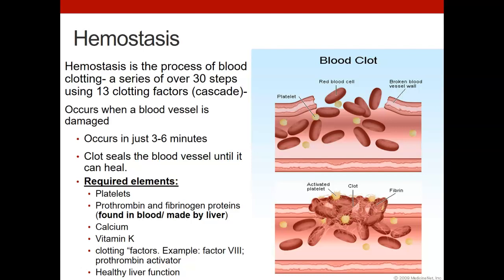Required elements for clotting include platelets, of course, and some proteins — prothrombin and fibrinogen. You need calcium, so minerals must be present. You need vitamins; Vitamin K is very important. Most of these factors are made by the liver. You also need clotting factors like factor VIII. Prothrombin activator is another example, and you need to have healthy liver function to make all of these different clotting factors.